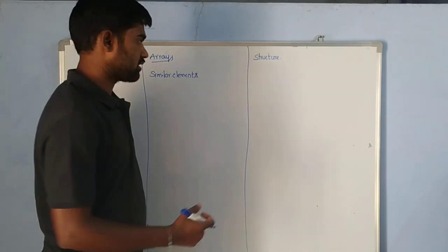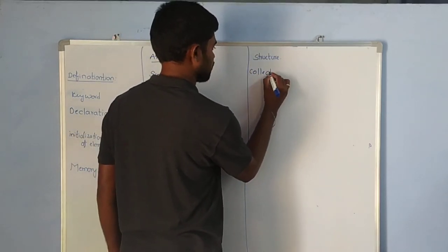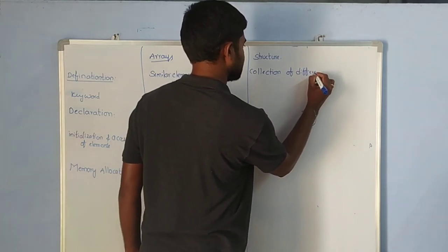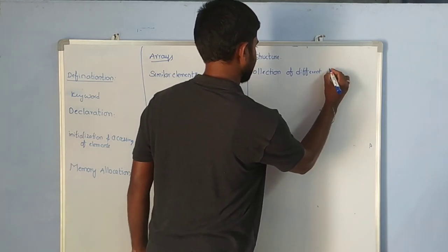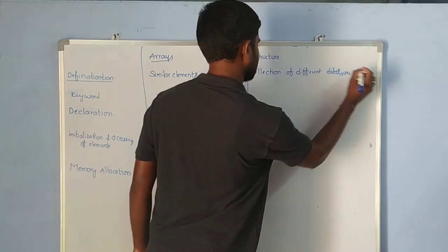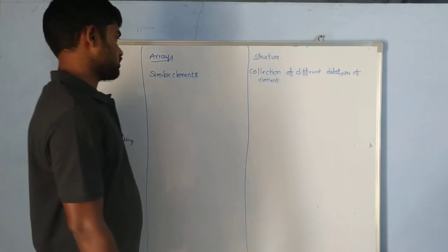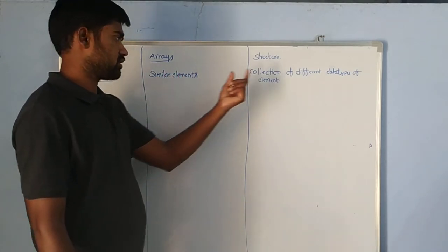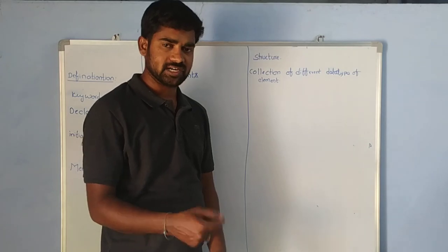In the structure, it is a collection of different data types of elements. So: array is a collection of similar elements, whereas structure is a collection of different data types of elements.